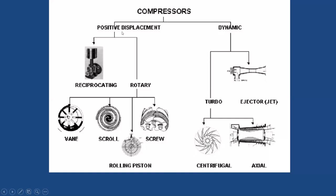Regarding when to choose positive displacement versus non-positive displacement compressors for refrigeration: positive displacement compressors are generally chosen for refrigeration applications because a very high compression ratio is mandatory, as the temperature limits are more extreme. The compressor must compress refrigerant from evaporating pressure to condensing pressure. For example, for a deep freezer, the range may be minus 40 to 55 degrees Celsius with air-cooled condensers.